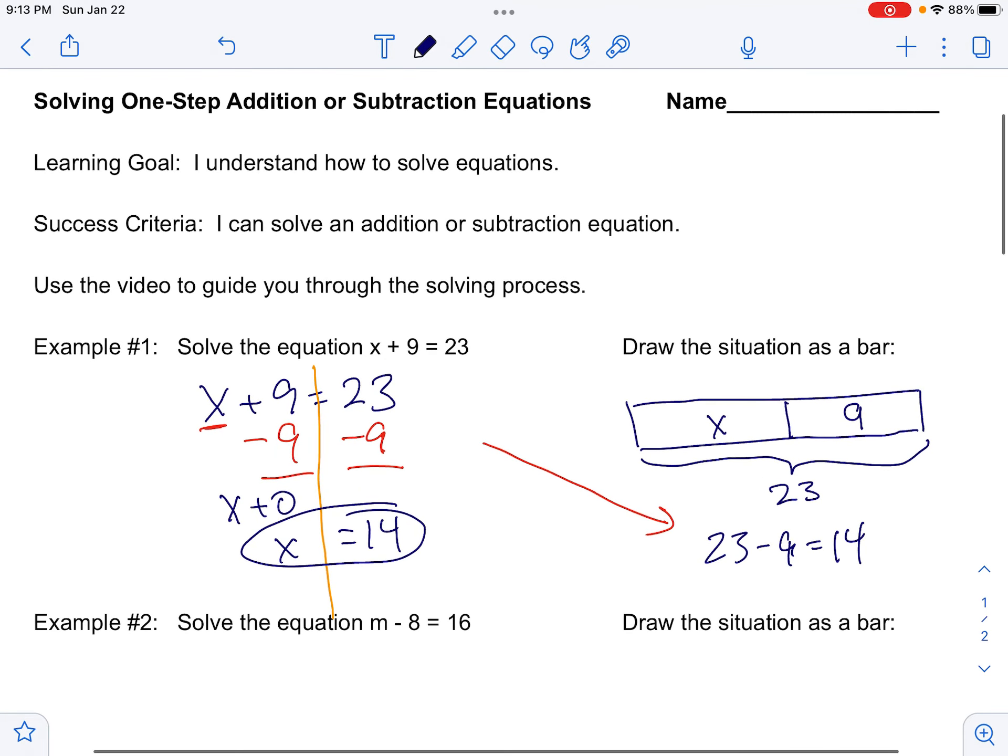So there's our answer. With the equation, one of the nice things is we do have a built-in check. If this is really right, then 14 plus 9 equals, and yeah it does, 23. So there we checked our work.